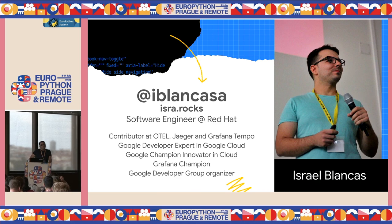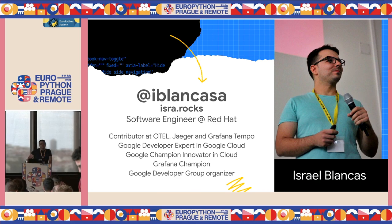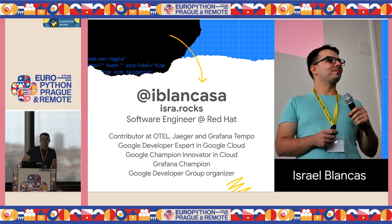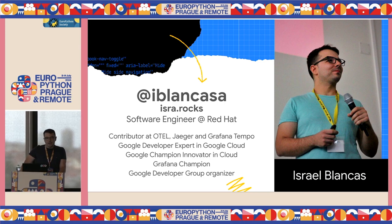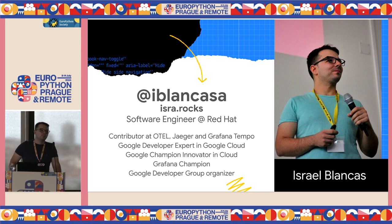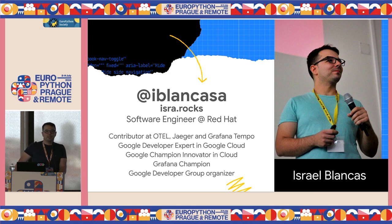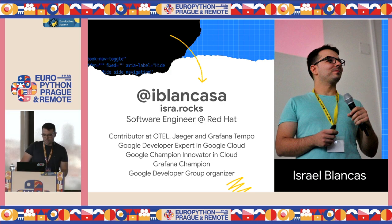I'm Israel. I came from Spain, from Granada, a pretty nice and beautiful city in the south of Spain. I am a software engineer at Red Hat working on the distributed tracing team. I'm also part of different community programs like Google Developer Expert. I used to be also an AWS Community Builder, and other things.